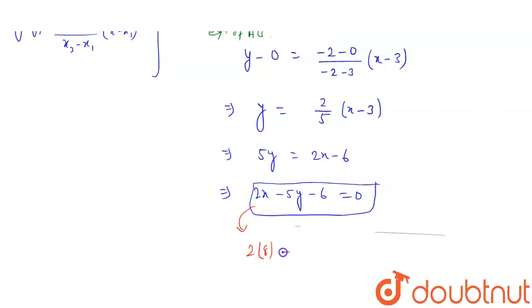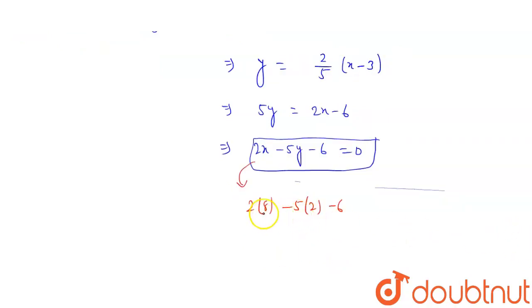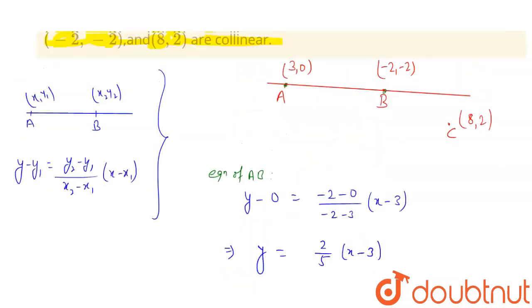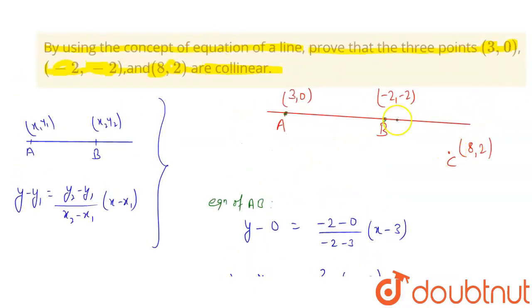You will get what: 2 × 8 - 5 × 2 - 6 will be what, will be 16, and this will be 10, 16 minus 10 minus 6, this will be 0. It means this (8,2) satisfies this equation. It means this point C will be on this line, not here. So erase it, this will be on this line only.